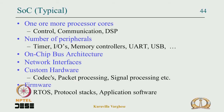A typical SoC has one or more processor cores — for example, a communication processor, a control processor, DSP cores for computation — along with many peripheral devices such as memory controllers, UART, USB, timers, and I/O. There is also an on-chip bus architecture to interconnect these peripherals, such as the AXI bus in ARM-based systems.